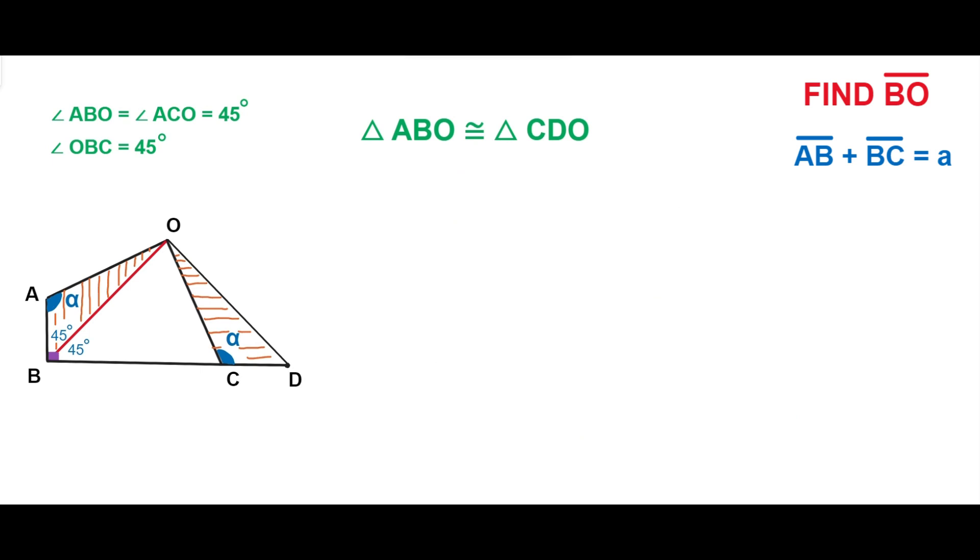In two congruent triangles, it follows that all the corresponding sides and angles of the triangles are congruent. In particular, the angles ABO and CDO are congruent, so the angle CDO equals 45 degrees.